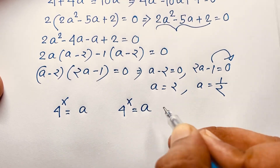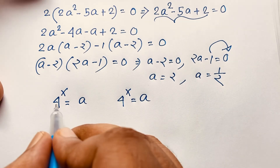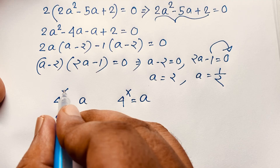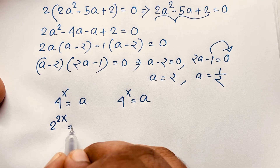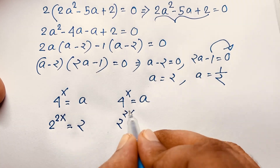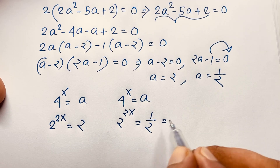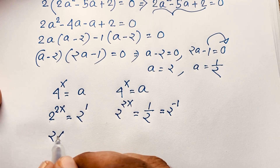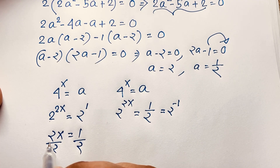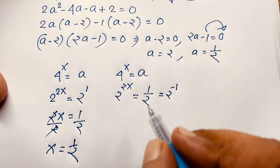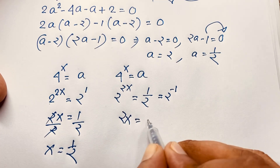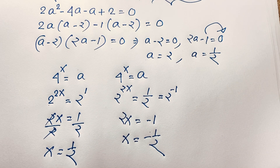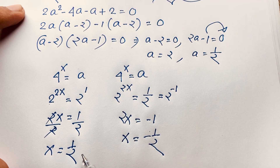Substituting back: 4 to the power x equals 2, and since 4 equals 2 squared, we get 2 to the power 2x equals 2 to the power 1, so 2x equals 1 and x equals 1/2. In the other case, 4 to the power x equals 1/2, which equals 2 to the power minus 1, so 2x equals negative 1 and x equals negative 1/2. We have two solutions: x equals positive 1/2 and x equals negative 1/2.